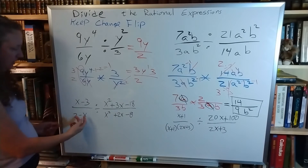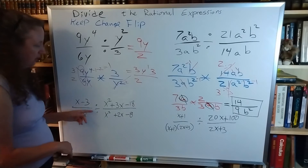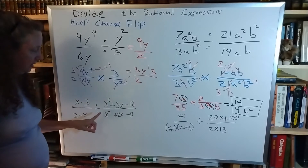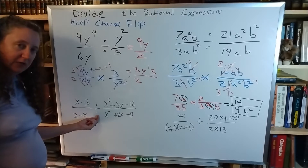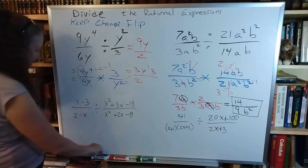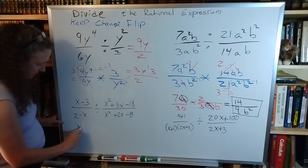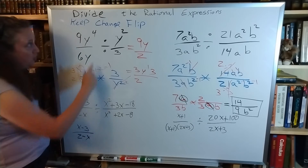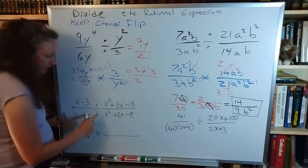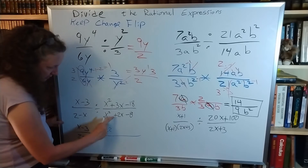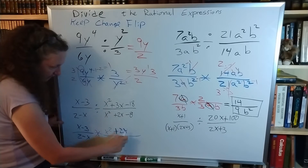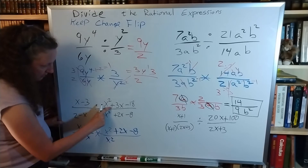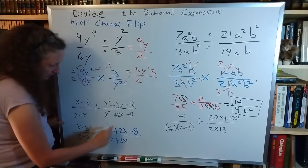Looking at this next one — the first fraction looks okay, you can work with that. The second fraction has a trinomial in both the top and bottom, so we need to factor that. But before we can factor it, we have to keep-change-flip: change the divide by and flip that fraction. So x minus 3 over 2 minus x stays the same, this gets changed to times, and we flip — so x squared plus 2x minus 8 goes to the top and x squared plus 3x minus 18 goes to the bottom.